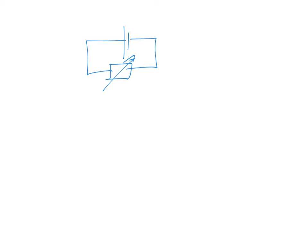Now how it works is like this. Let's say you have a cell and you connect it to a variable resistor. Now let's say our cell has 12 volts. Because you are connecting to only one resistor, which is a variable resistor, the PD across this variable resistor will also be 12 volts.